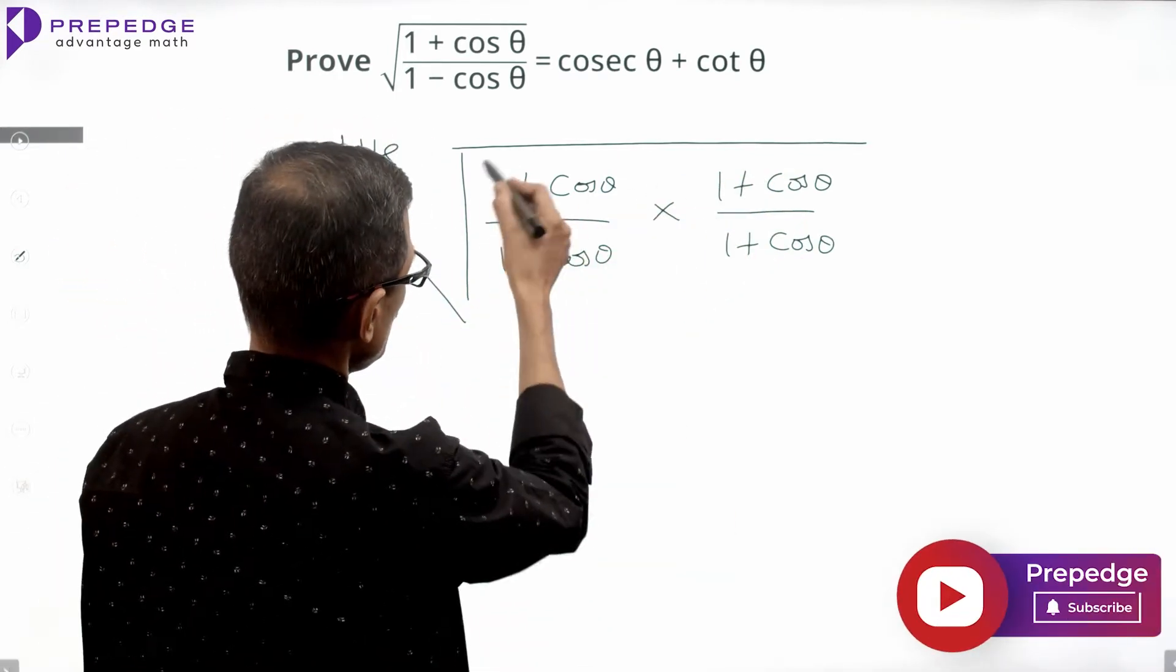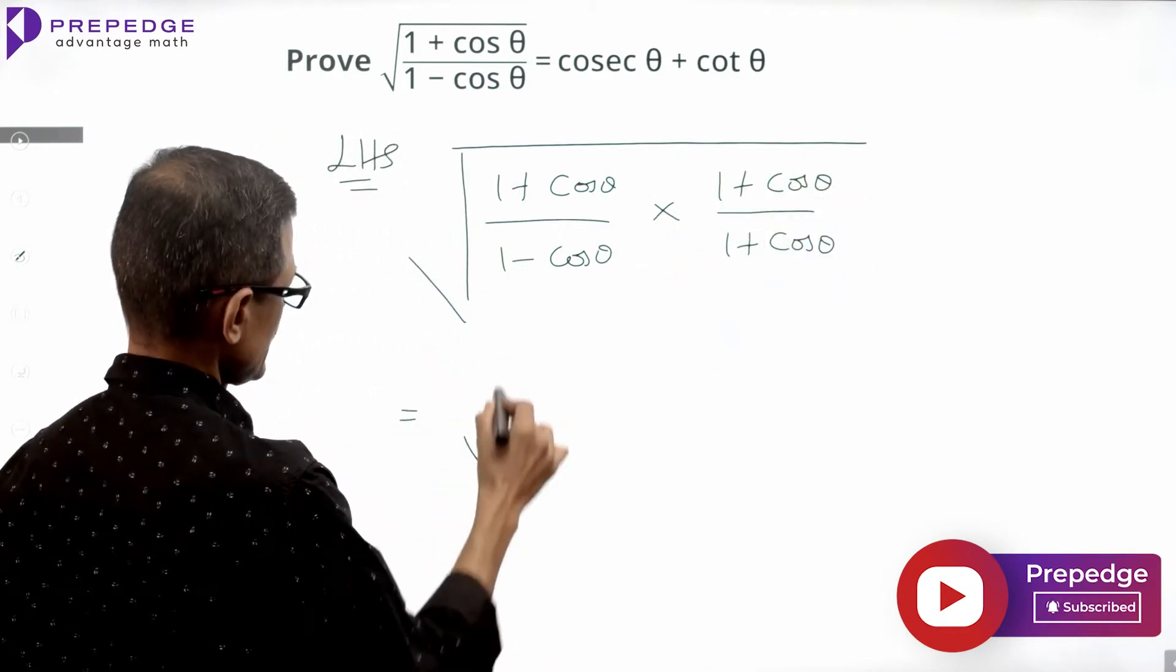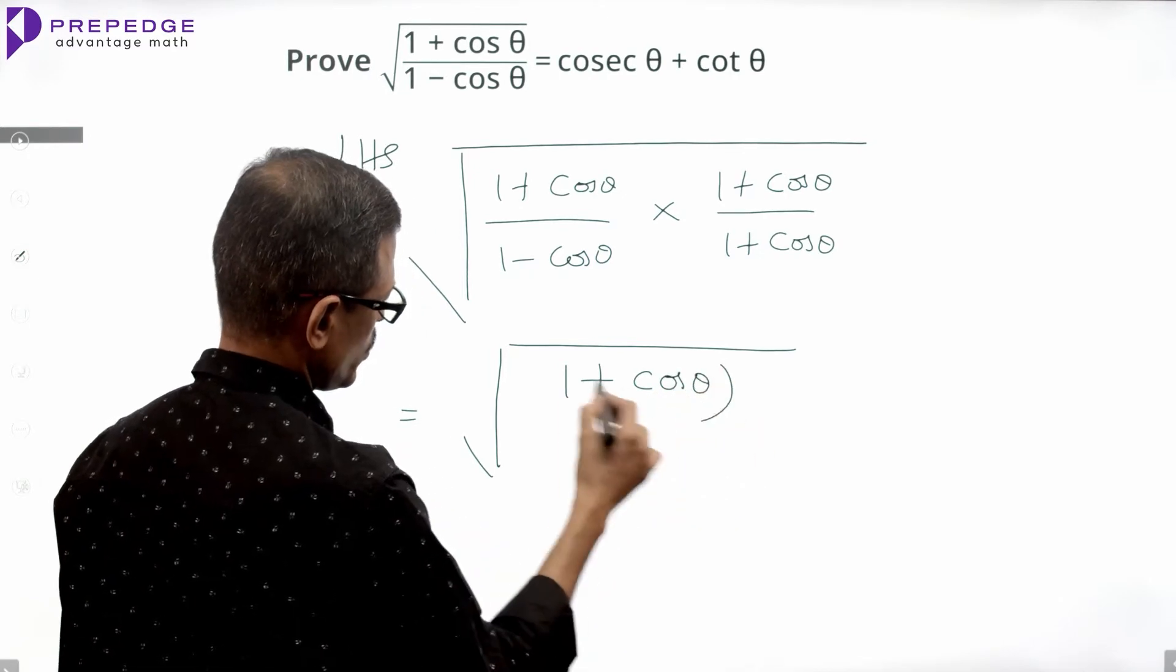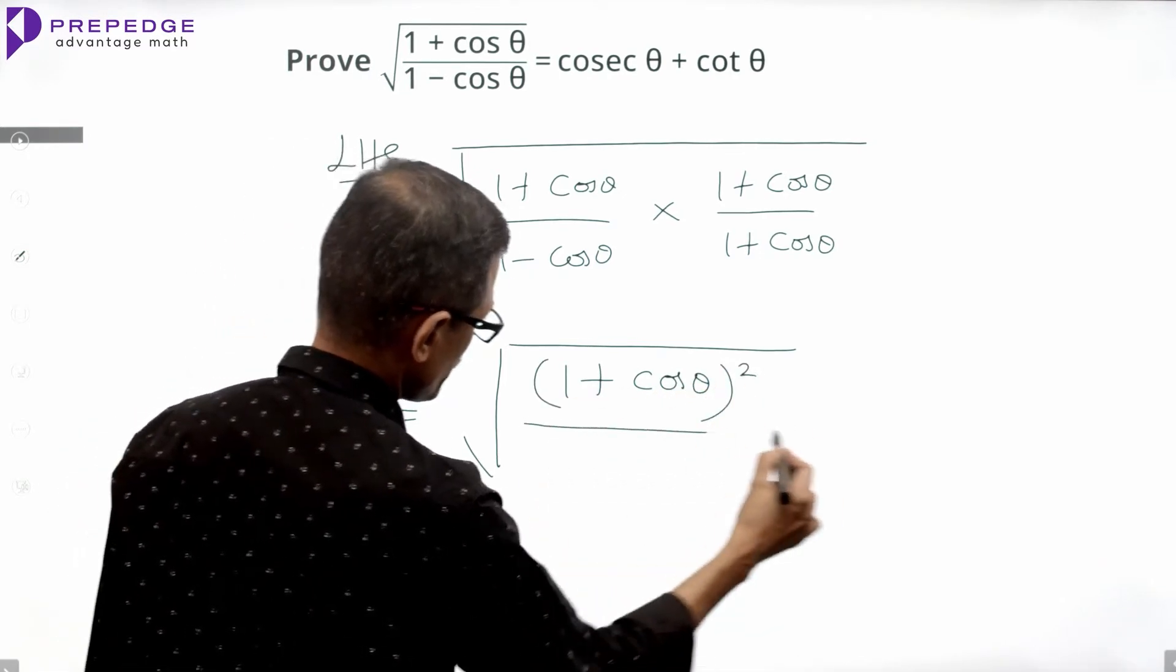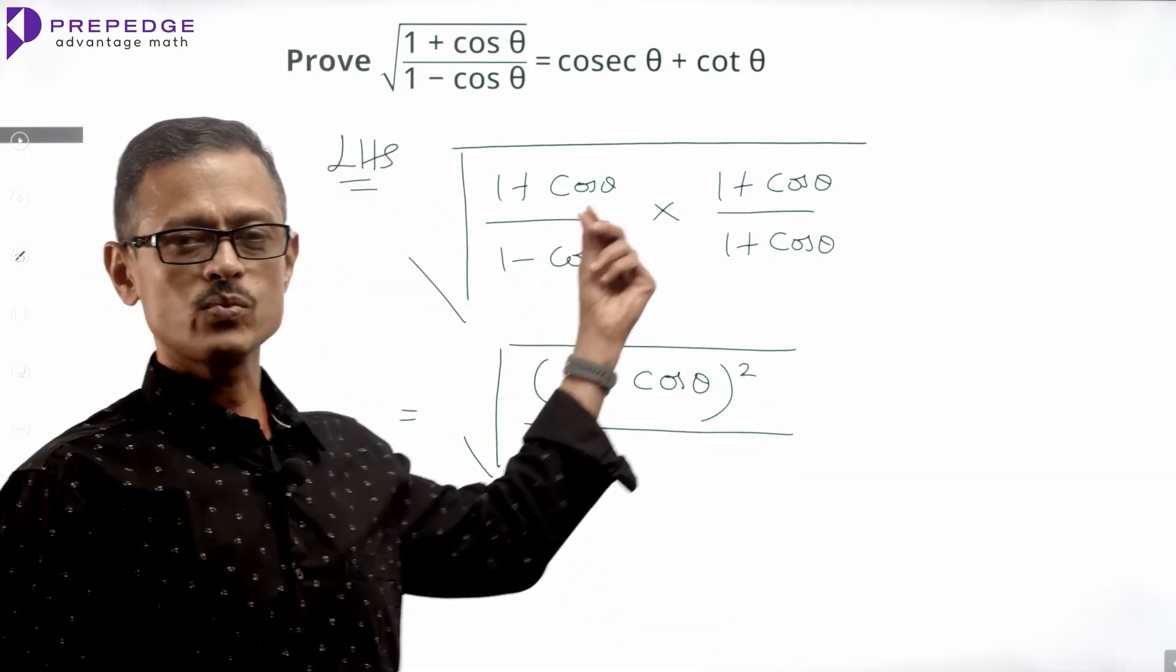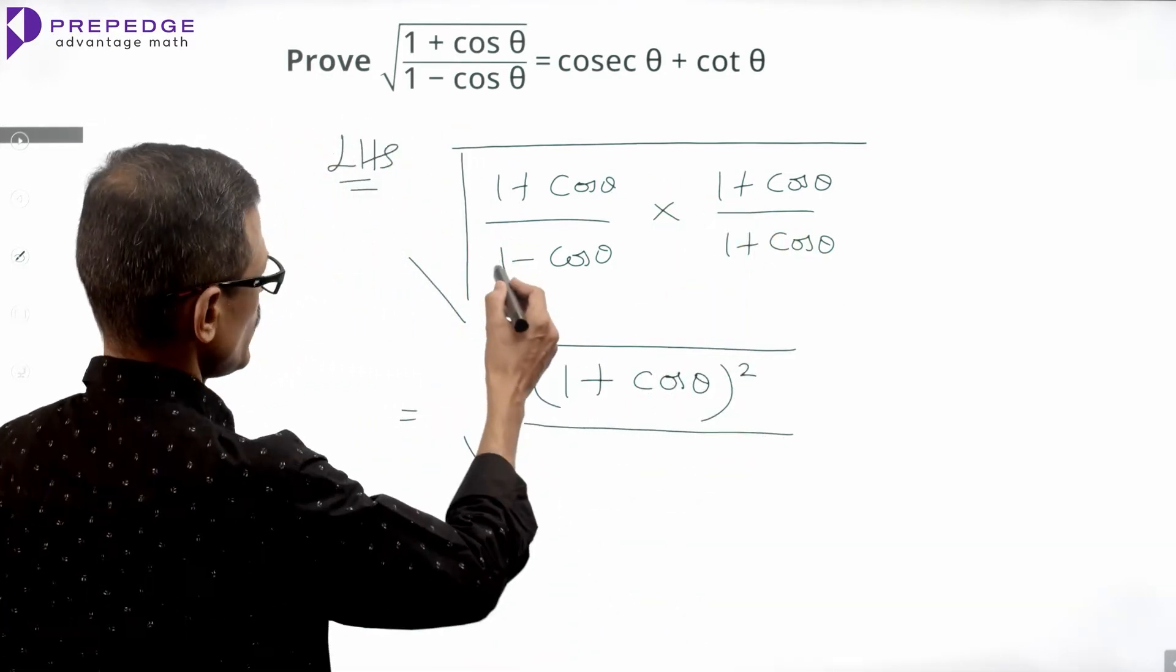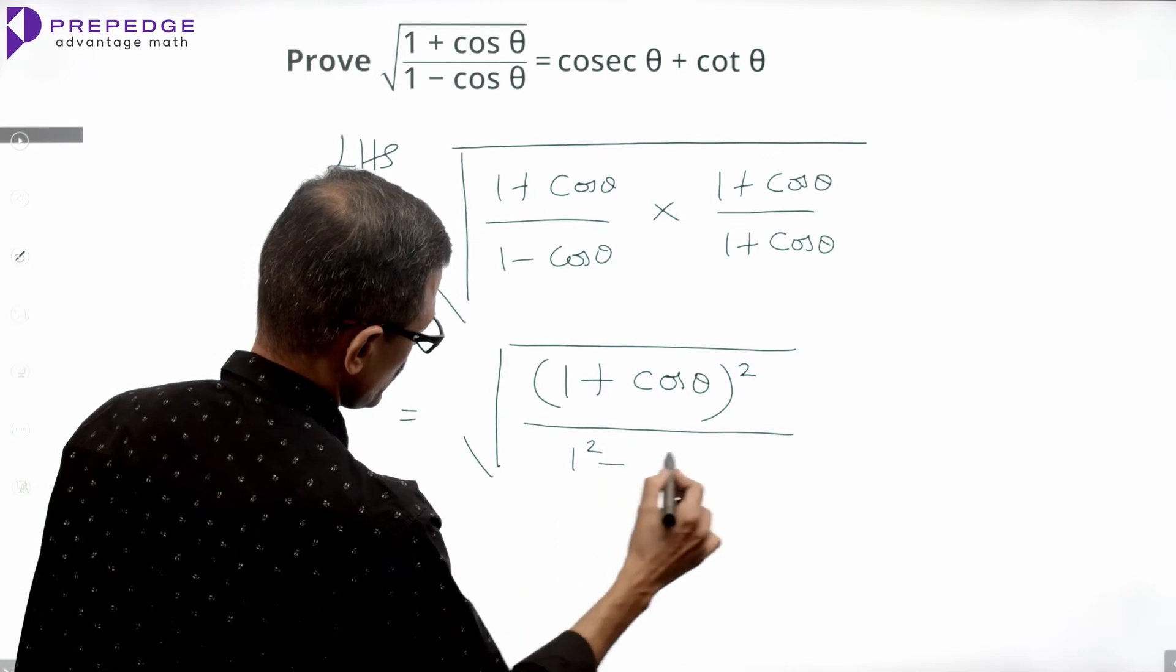Now the numerator: 1 plus cos theta into 1 plus cos theta. That will make it 1 plus cos theta whole square, divided by the denominator which is in x minus y into x plus y format, which is x square minus y square, which is 1 square minus cos square theta.